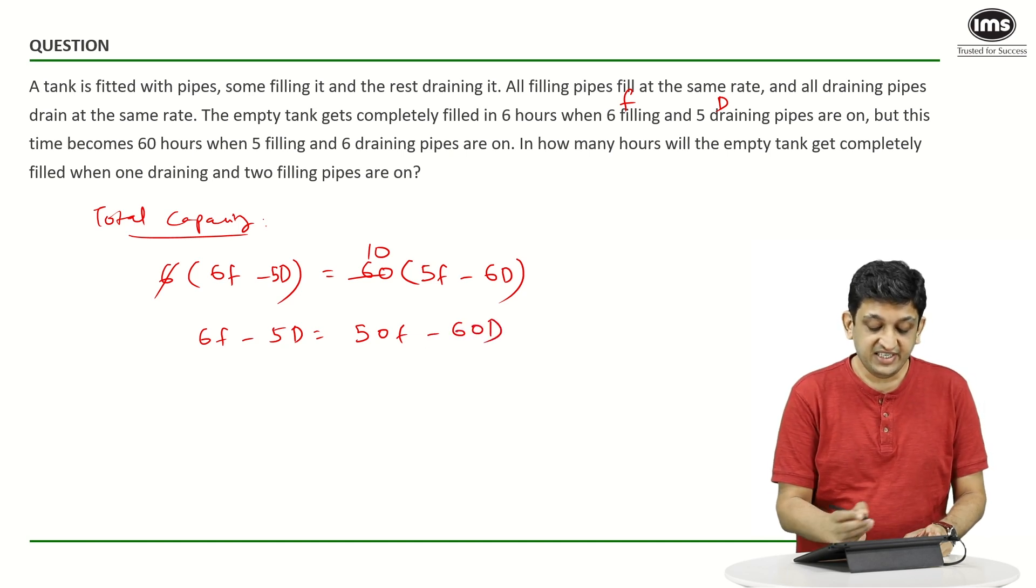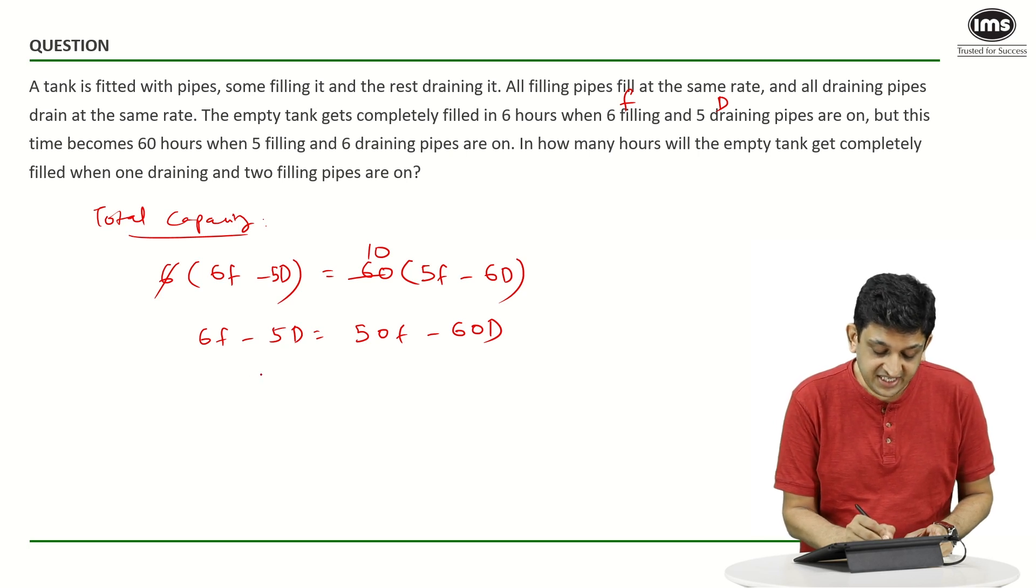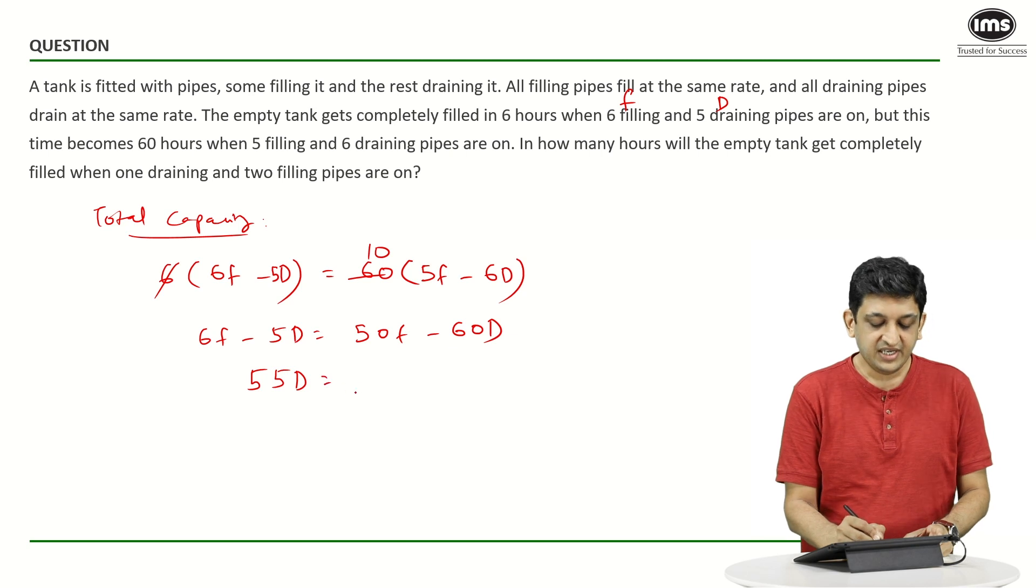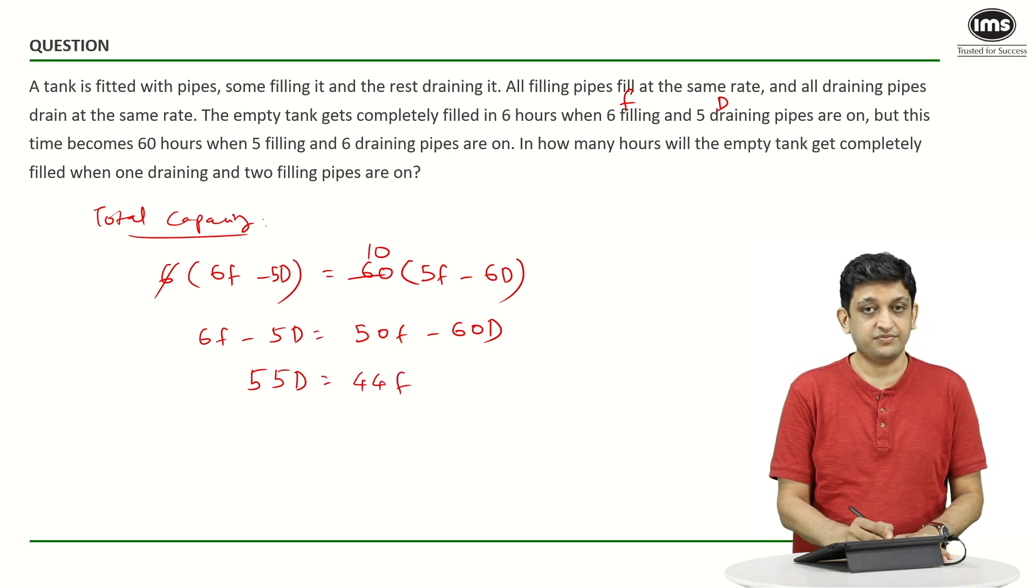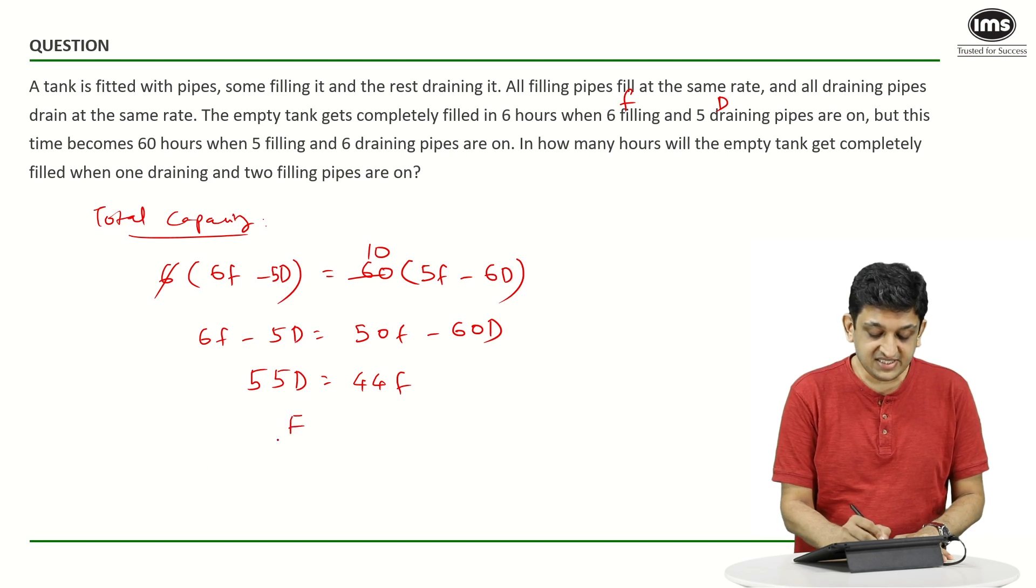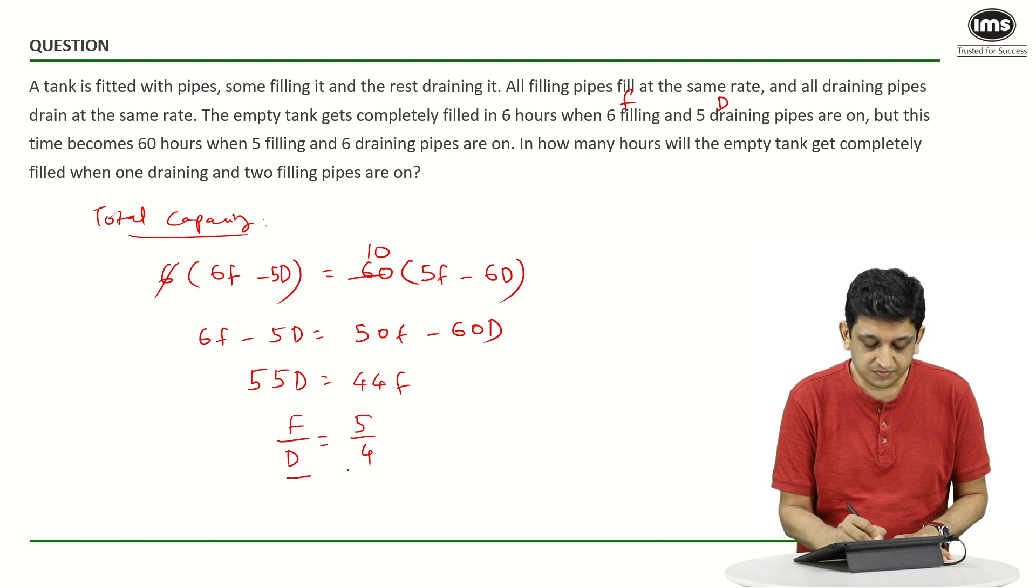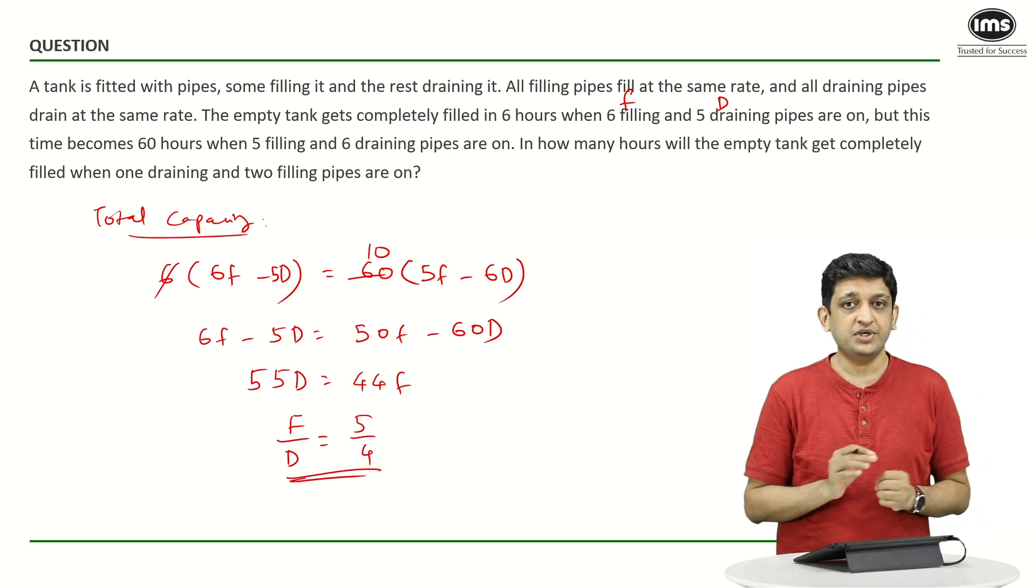So, if you again rearrange the terms, we are going to see 60D minus 5D that is 55D equals 50F minus 6F that is 44F. So, what we can see here is F by D is going to be 5 by 4.